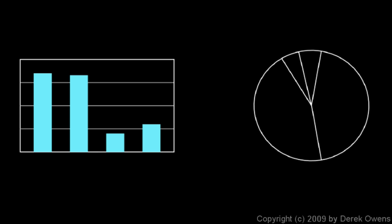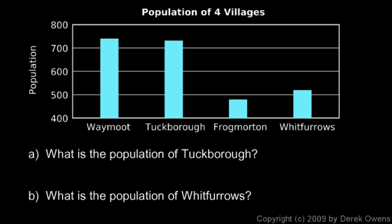Here's another bar graph showing the population of four villages: Waymoot, Tuckborough, Frogmorton, and Whitfurrows — names you might recognize as towns in the Shire from the Tolkien books. The populations are given in increments of 100, so sometimes you need to estimate when reading this bar graph.